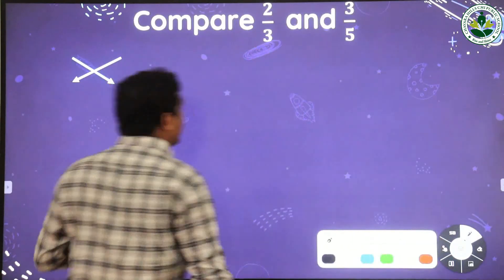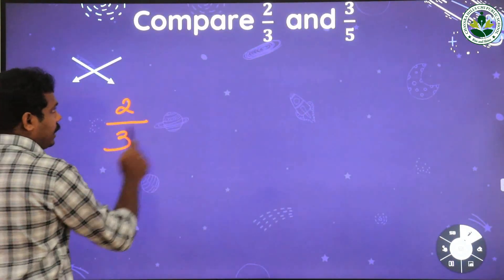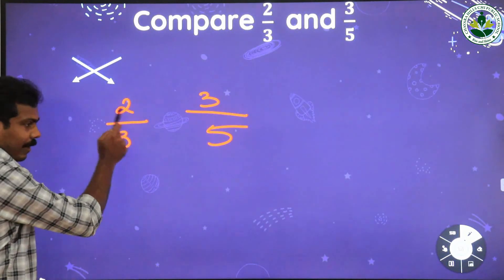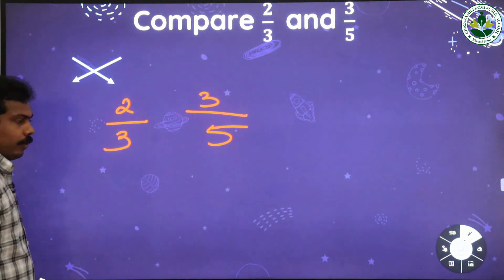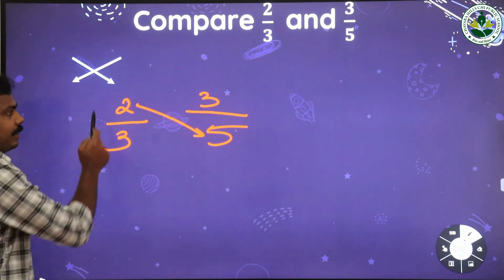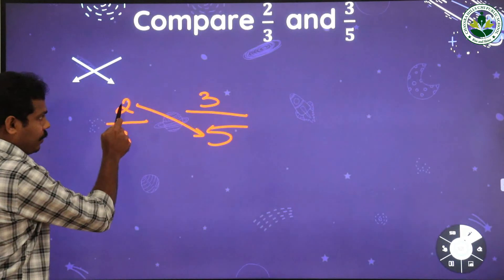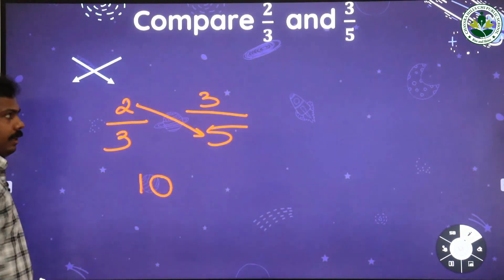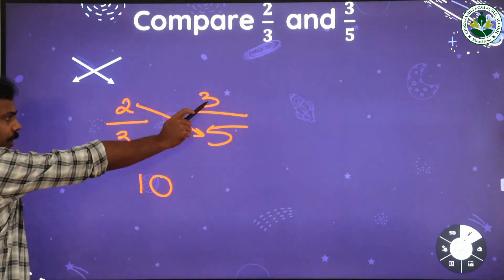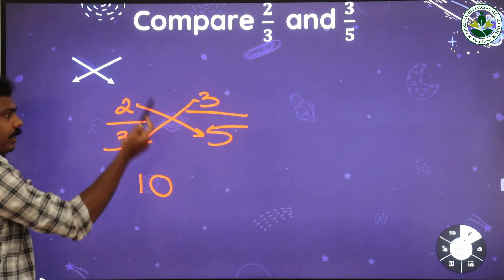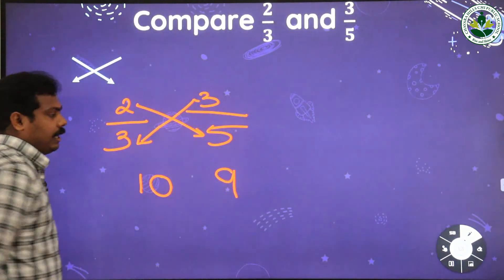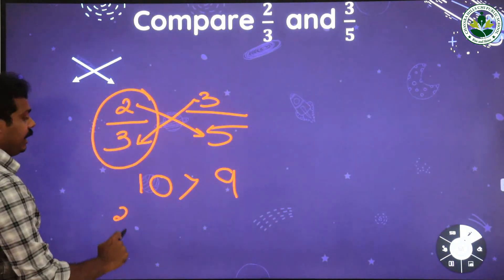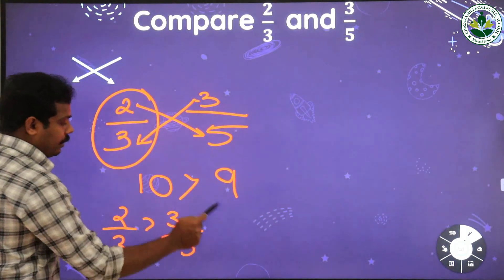For the cross product method, we write the two fractions: 2 by 3 and 3 by 5. We multiply the numerator of the first fraction with the denominator of the second fraction: 2 into 5 is 10. Then multiply the numerator of the second fraction with the denominator of the first fraction: 3 into 3 is 9. Comparing 10 and 9, since 10 is the bigger number, 2 by 3 is the bigger number. So 2 by 3 is greater than 3 by 5.